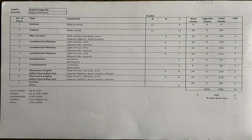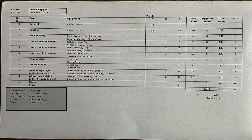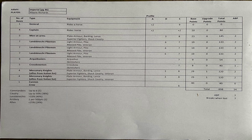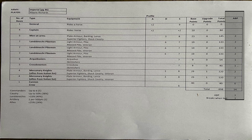Let's take a look at our final list. The first thing we should check is if the list meets the army composition criteria. For the Imperials we're allowed up to six commanders, up to 50% cavalry, we must have at least 33% of the army as Landsknechts, we're allowed one artillery piece per 500 points, and we must not have more than 25% allies. Looking at our list I can see that we meet these criteria so we're good to go. To recap: skirmishers count as one army break point, formed troops up to 150 points count as two army break points, and formed troops over 150 points count as three army break points.